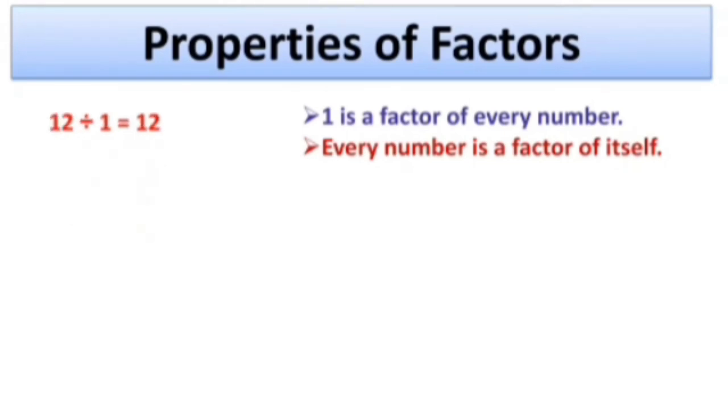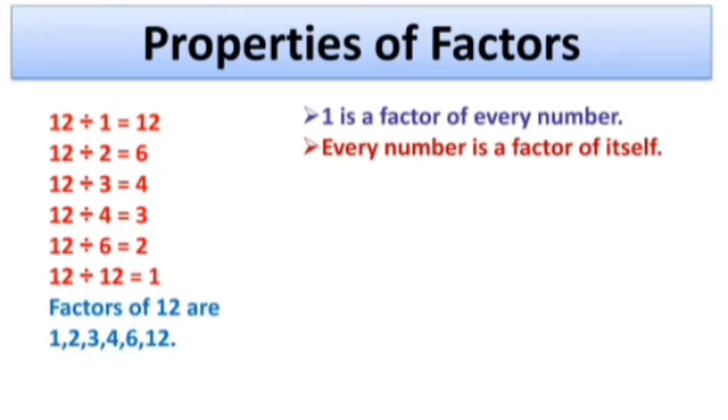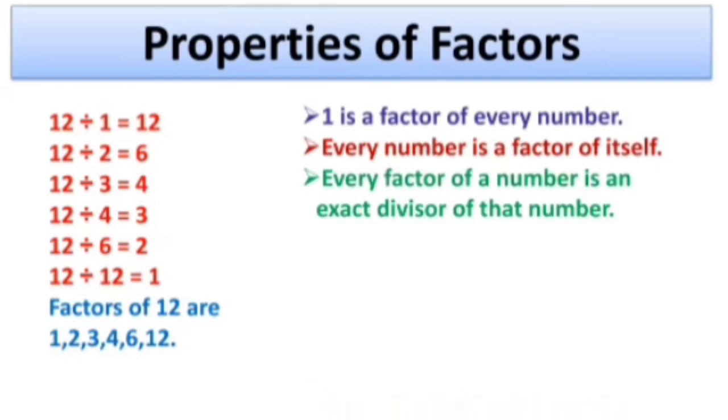Now 12 divided by 1 equals 12. 12 divided by 2 equals 6. 12 divided by 3 equals 4. 12 divided by 4 equals 3. 12 divided by 6 equals 2. And 12 divided by 12 equals 1. That means 1, 2, 3, 4, 6 and 12 are factors of 12. So we can say every factor of a number is an exact divisor of that number.